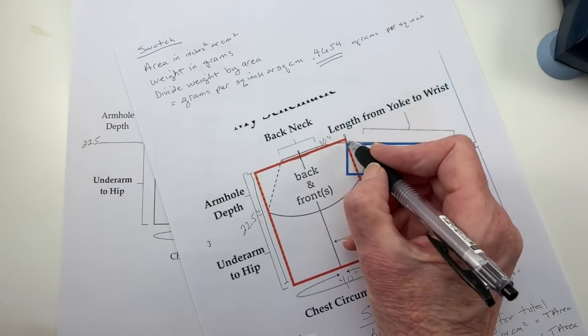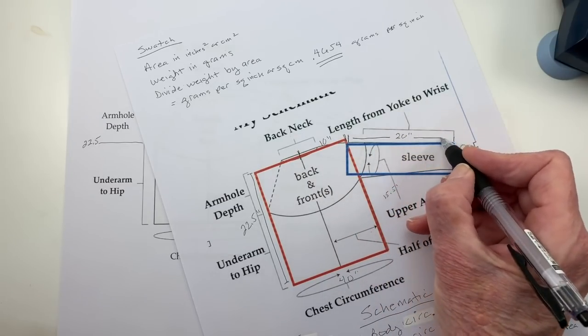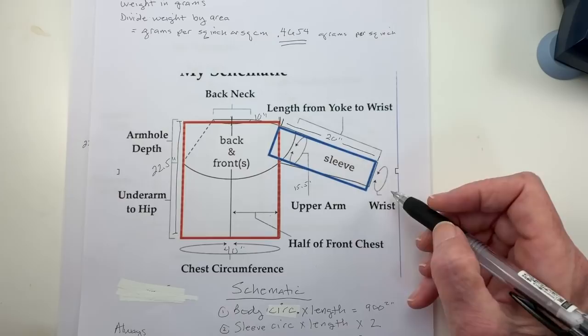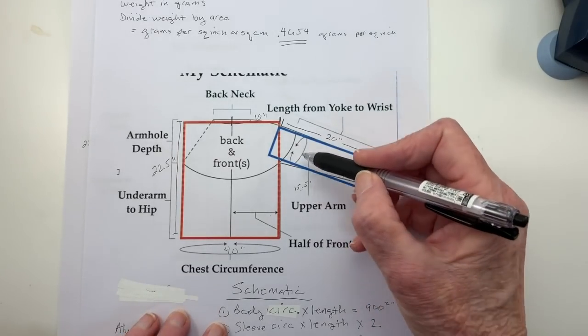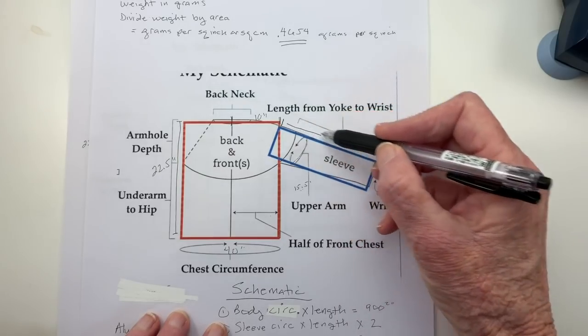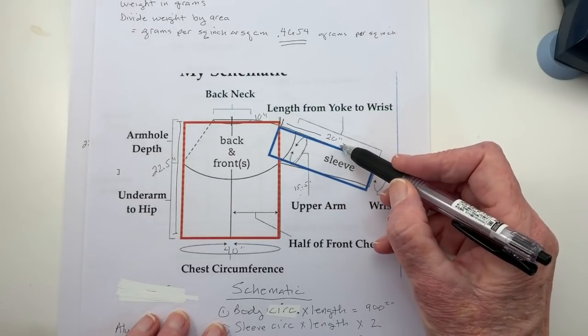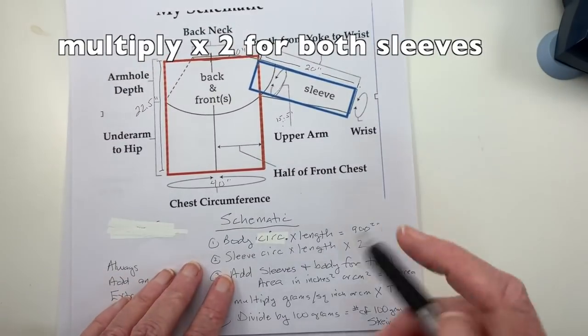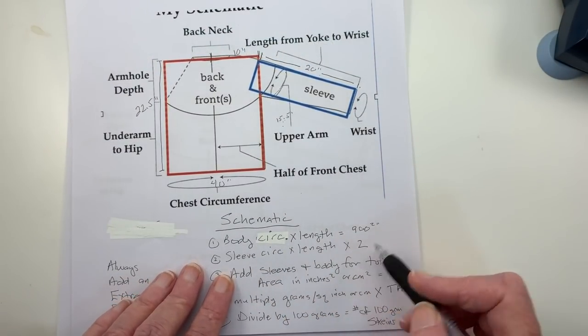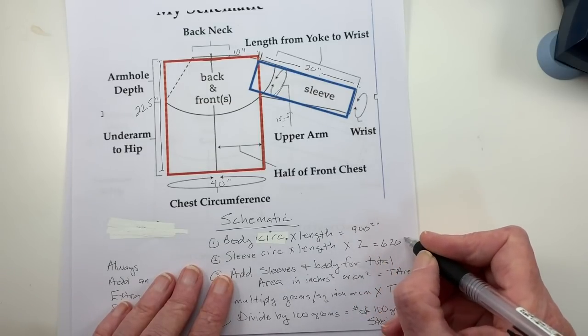So the length from here to here is going to be 20 inches, and I'm not going to worry about the cuff, the wrist being smaller around because I would, to tell you the truth, I'd rather have extra yarn than not enough. So now I know that I have 15.5 inches circumference by 20 inches in length, so I multiply 15.5 times 20, and then I multiply that by 2 because I have 2 sleeves, correct? So the sleeve circumference times the length times 2, and for me that equals 620 square inches.